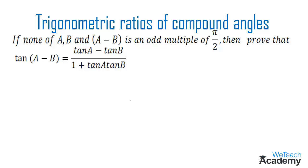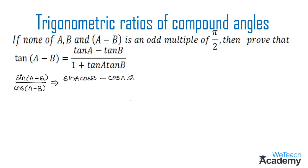Let us prove this formula by considering the LHS, that is tan(A minus B). So tan(A minus B) can be written as sin(A minus B) divided by cos(A minus B). We already know the formula of sin(A minus B) which is sin A cos B minus cos A sin B, divided by the formula of cos(A minus B) which is cos A cos B plus sin A sin B.